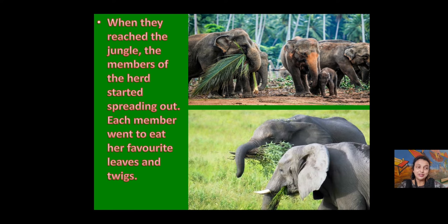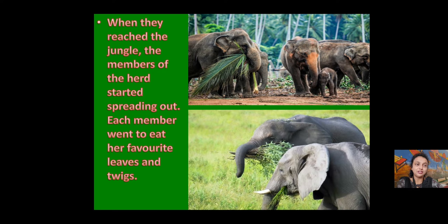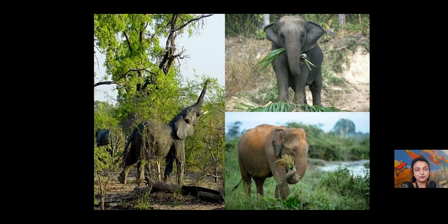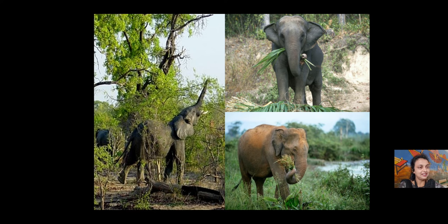Elephants live in the forest. The forest gives them good climatic conditions, water, and food. Everything they need is available there. So the family members went here and there and started to eat their food. Just like we like different food items every day — if mama prepares brinjal every day it gets difficult — these elephants also eat different kinds of food in the jungle.